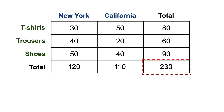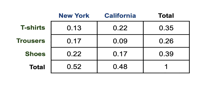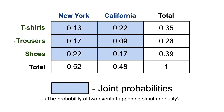And if we divide by this total number, we get the probabilities of selling a specific piece of clothing at a specific location, which is known as the joint probability. The joint probability measures the likelihood of two events happening simultaneously. In our example, a joint event could be that of selling a t-shirt in New York, which is equal to 0.13, or selling some shoes in California, which is equal to 0.17.